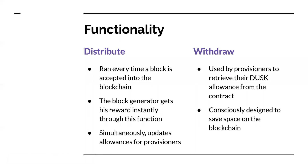The fee contract has two functions. The first one is distribute — this function runs every time we accept a block into the blockchain as the very last transaction. It gives the block generator his reward instantly, similar to a coinbase transaction in Bitcoin or Ethereum. Additionally, for each provisioner selected for that round, a small reward is allocated to their allowance, which is a simple balance sheet kept in the contract storage. The second function is withdraw, which subtracts a given amount from the allowance of a provisioner and sends the money to them in actual DUSK — converting it from a number in contract storage to an actual Phoenix output that goes to their wallet.